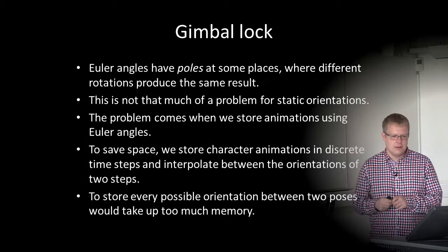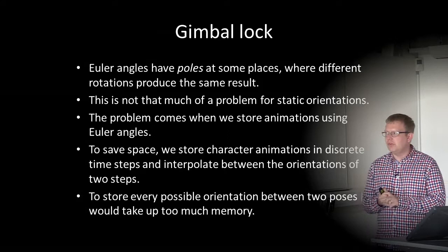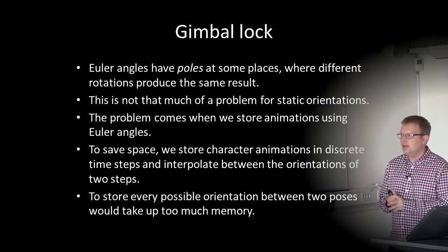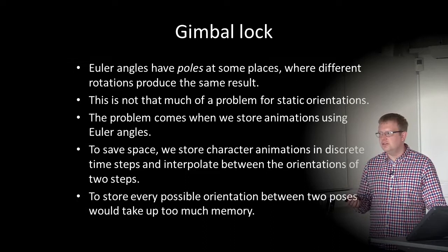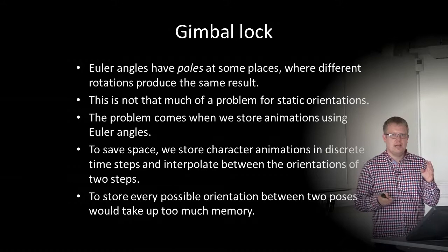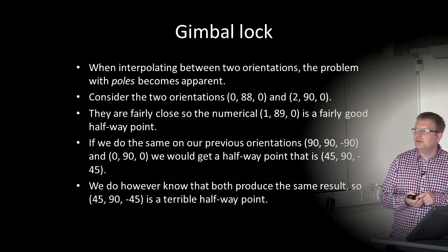This is not much of a problem for static orientations. The problem comes from storing animations using Euler angles. To save space, we store character animations in discrete time steps — keyframes — and interpolate between the orientations of two steps. When interpolating between two orientations, the problems with poles become apparent.